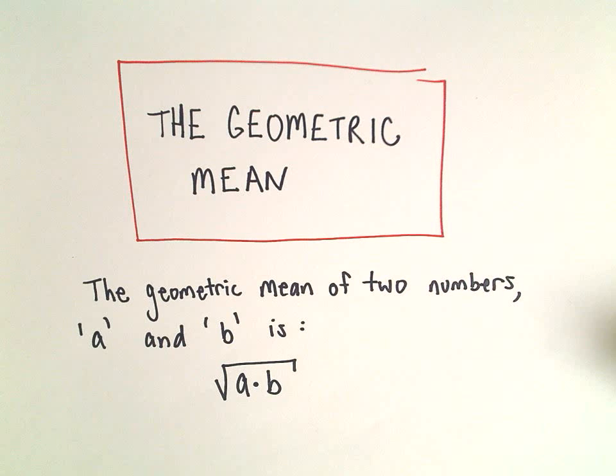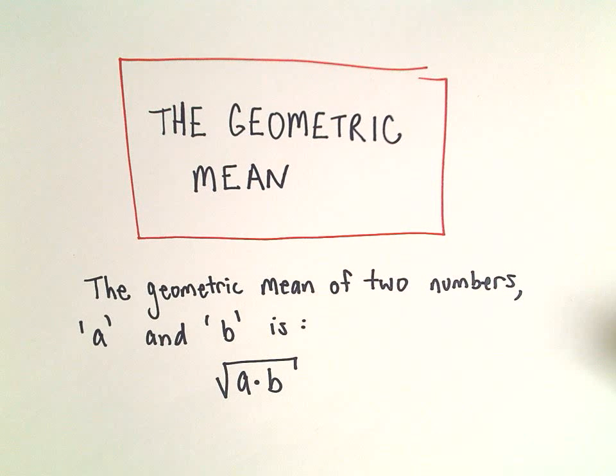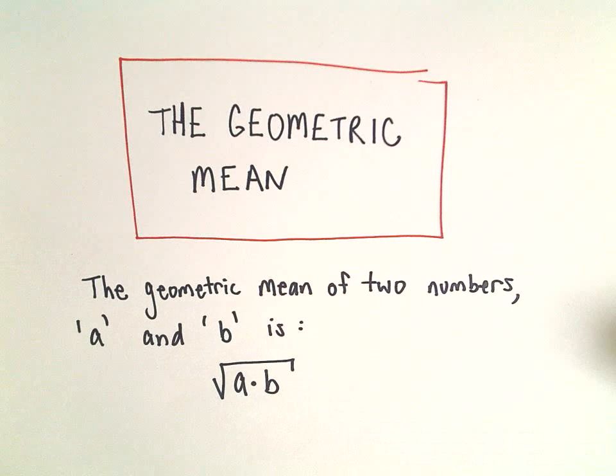In this video I want to do a quick example about the geometric mean and point out how you can think about it, what it means. The geometric mean of two numbers A and B is: we multiply those two numbers together and then take the square root, and that's the geometric mean. Certainly not the same as the arithmetic mean, the average.